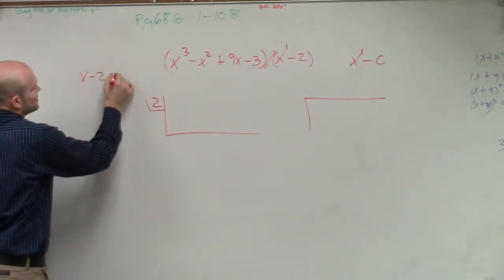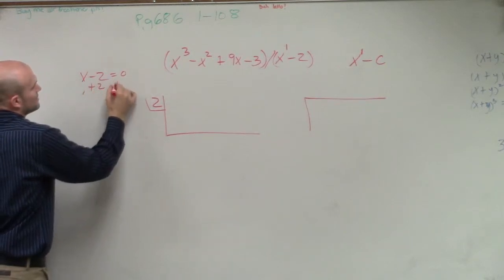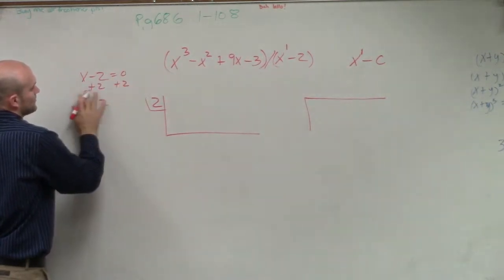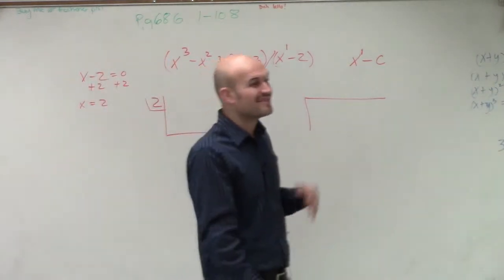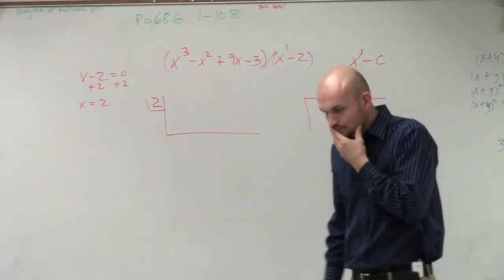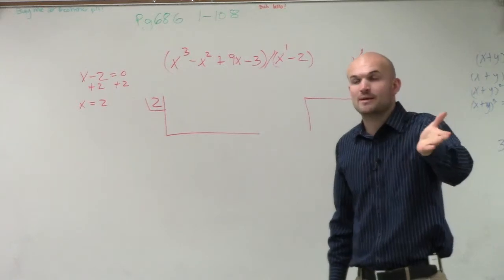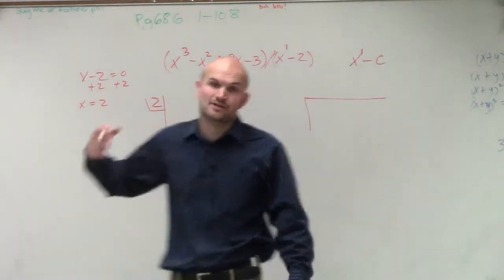Because remember, we said x minus 2 equal to 0. And then you solve. So x equals 2, right? So that's your zero. So you plug the 2 in there. Then the next couple things is, so now you got to go back to what Ronnie said and make sure that's in descending order.